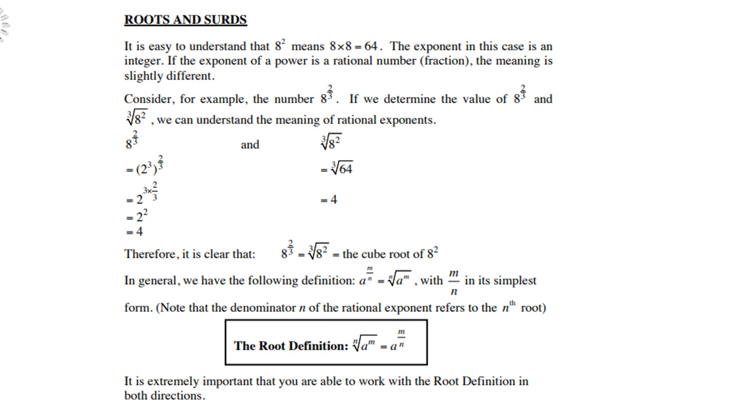8 to the power two-thirds and the cube root of 8 squared: 8 is 2 to the power 3, three times two-thirds gives you 2, so therefore 4. And the cube root of 64 is also 4.